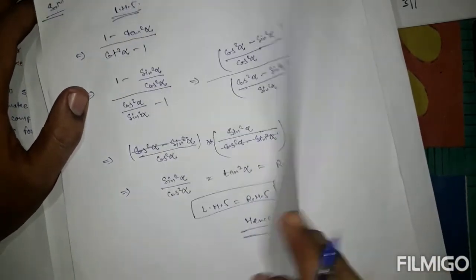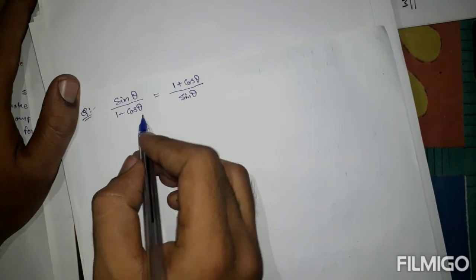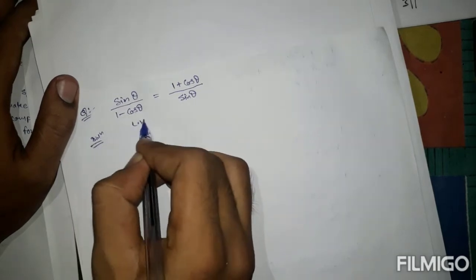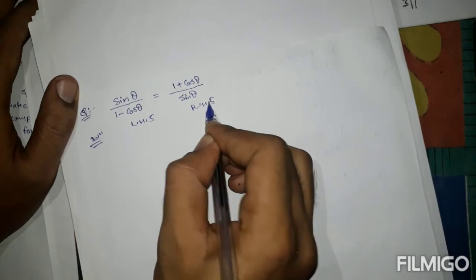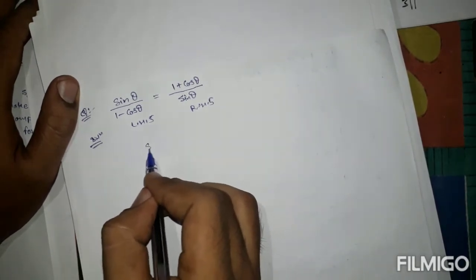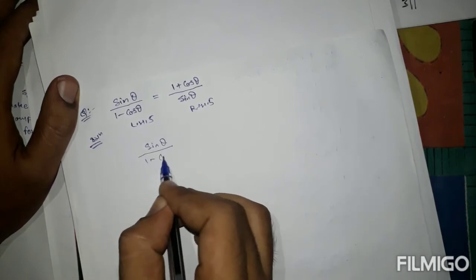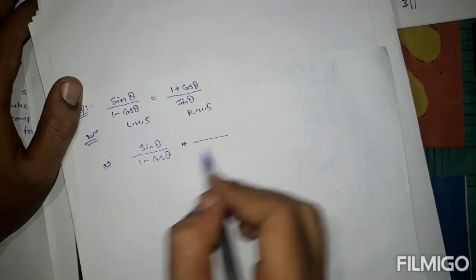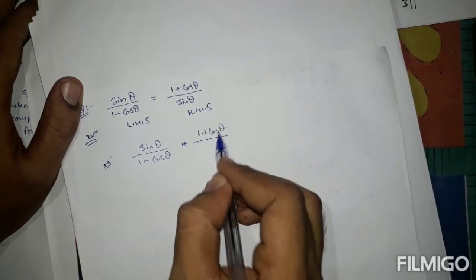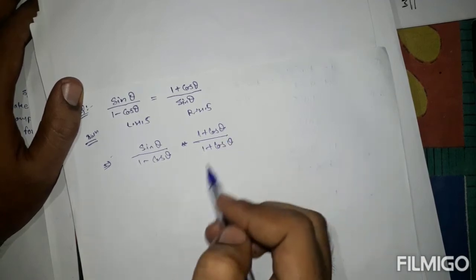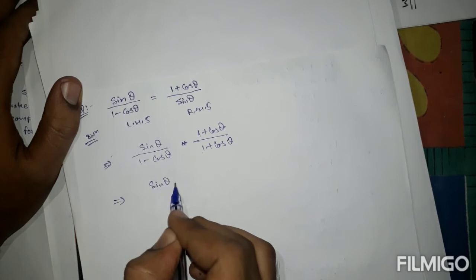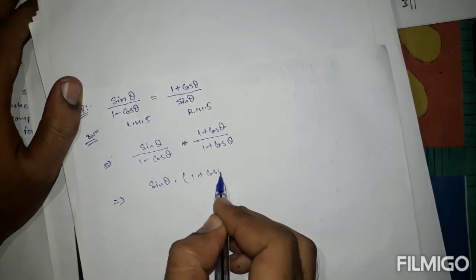Our next question is: sinθ/(1 - cosθ) = (1 + cosθ)/sinθ. Same procedure — this is LHS, this is RHS. Take LHS: sinθ/(1 - cosθ). Multiply numerator and denominator by (1 + cosθ). There will be no change. The numerator becomes sinθ·(1 + cosθ).